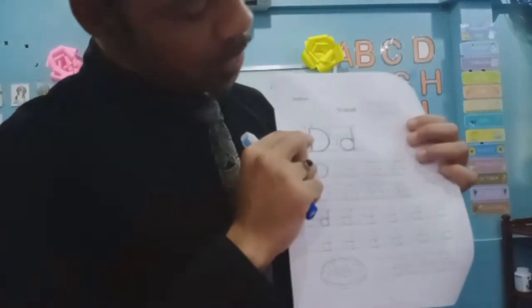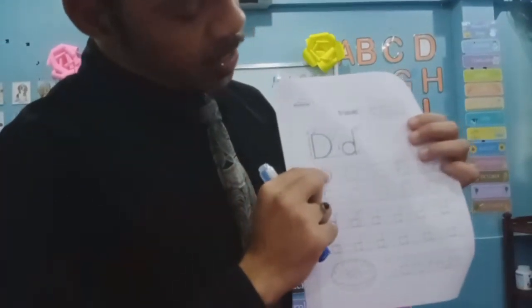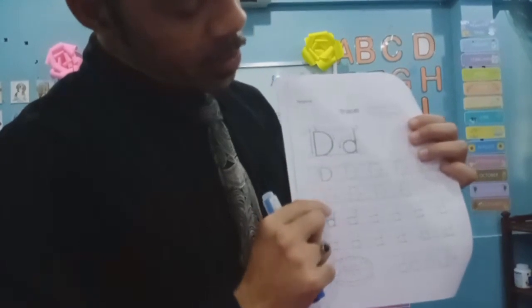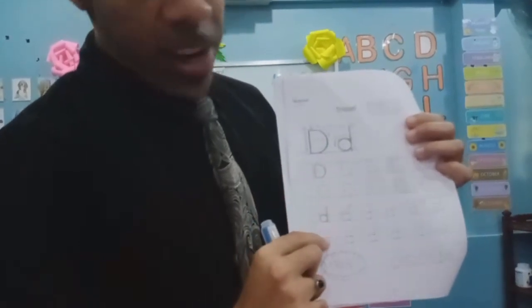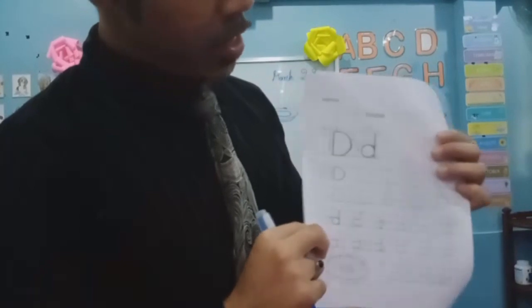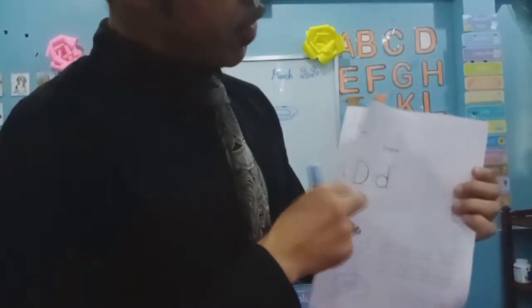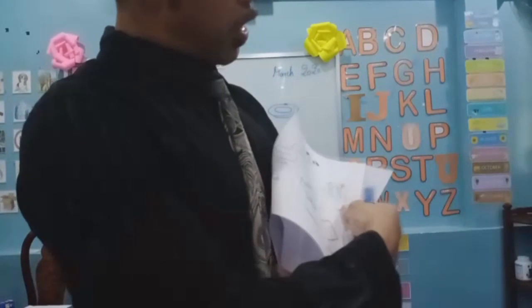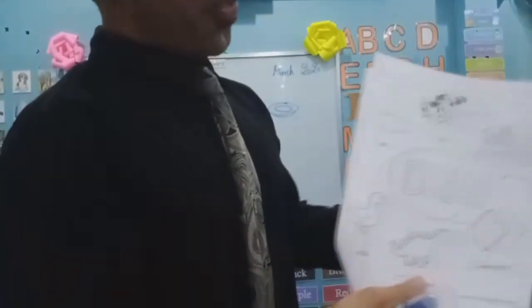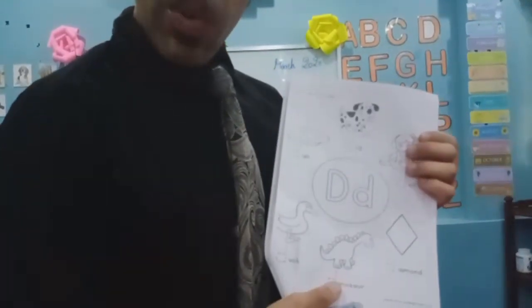I want us to practice our lines here, here, here, and here. Okay? When you're done, you can turn the page and color all the things that start with D.